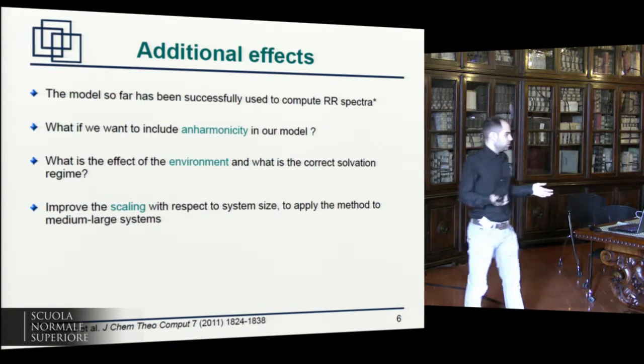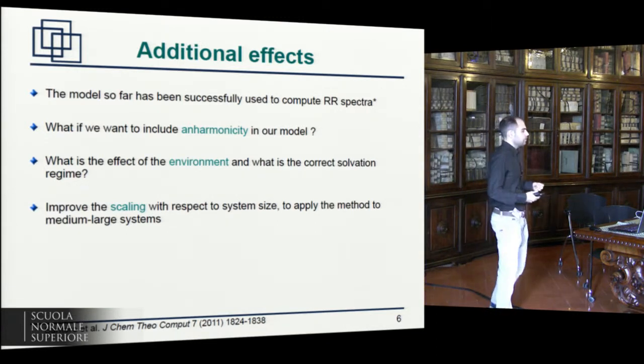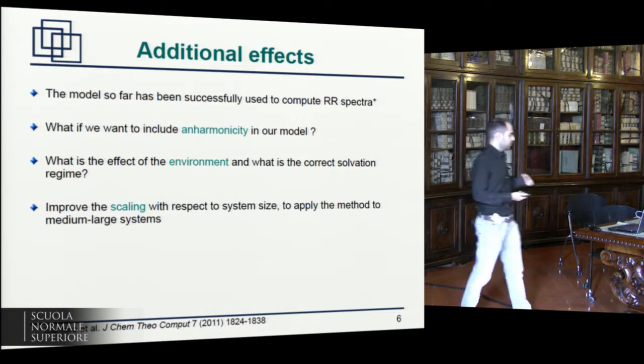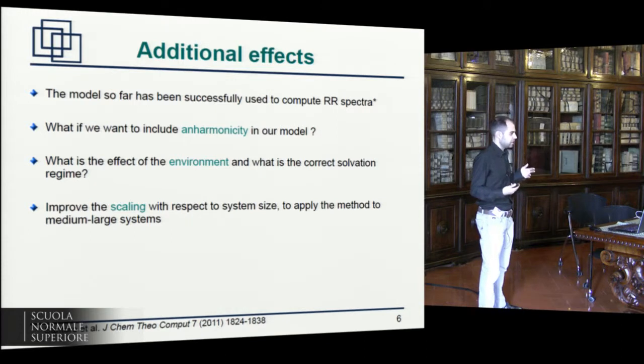This whole approach has been used in the past very successfully to compute the resonance Raman spectra. But we wanted to see if we could go beyond and tell us something more about this phenomenon. In particular, since this is a kind of vibrational spectroscopy, we wanted to see what is the effect of the anharmonicity of the potential energy surfaces. Because it has been shown that for other spectroscopies, such as infrared or vibrational circular dichroism, there can be a huge effect. So this is the first thing. Then we wanted to study the effect of the environment. And finally, we wanted to see if we could improve the scaling of the method so that it could go and be applied to bigger systems.